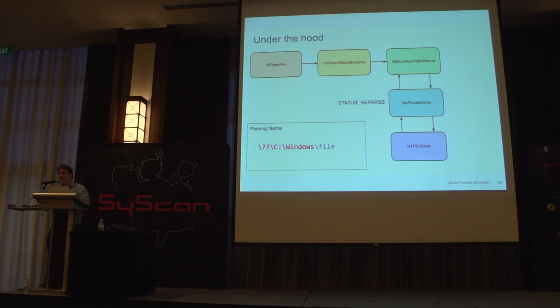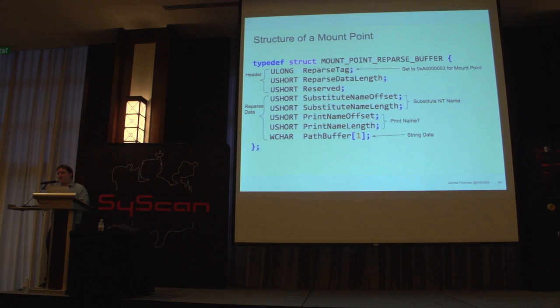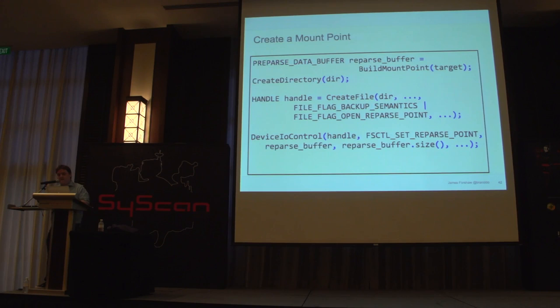The reparse point buffer contains a common header with a tag identifying it as a mount point type, a substitute name (the new NT path to replace it with), and a print name (useful information for the user). Creating a mount point is simple: you build that reparse point buffer, create a directory with write access, and set an FSCTL to set the reparse point buffer. This requires no privileges whatsoever — you can do this from an absolutely untrusted user as long as you can open a directory and write to it.